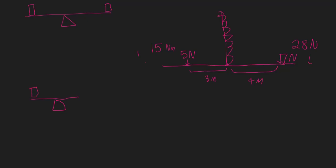Let's say we've got a lever with a 5 kilogram box on one side and a 2 kilogram box on the other side, with the distance on one side being 12 meters. The question is: what is the unknown distance on the other side, assuming the lever is balanced? First, we convert mass to force: 5 kilograms times g gives us 50 newtons, and 2 kilograms times g gives us 20 newtons.